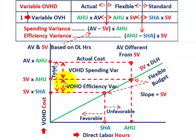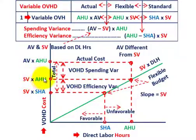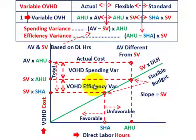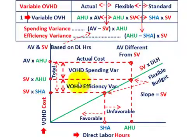The efficiency variance is the difference between the standard variable rate times the actual hours used and the standard variable rate times the standard hours allowed. That's the difference between those two points on the graph. We call it an efficiency variance because it's based on our quantity — the number of hours — not a rate. That's our efficiency variance laid out on the graph.